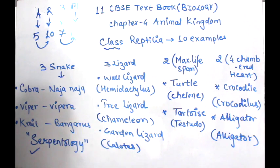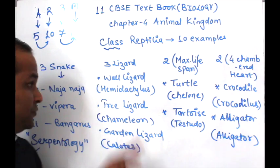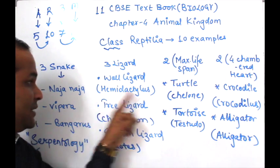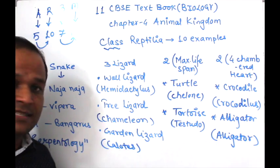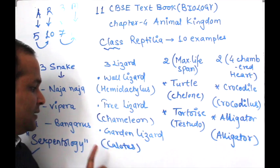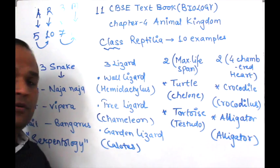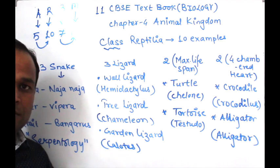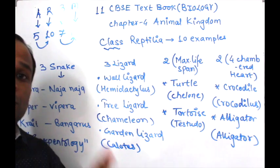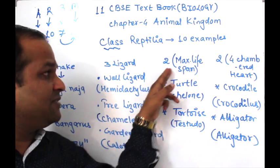The next group is 3 lizards. These are: Wall lizard (Hemidactylus), which you find in your house; Tree lizard, that is Chameleon; and Garden lizard, that is Calotes. So 3 lizards are given.